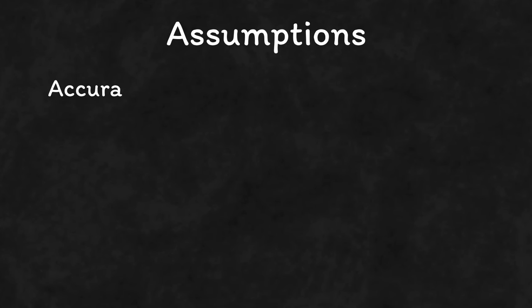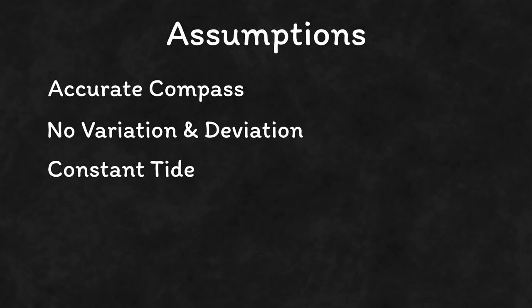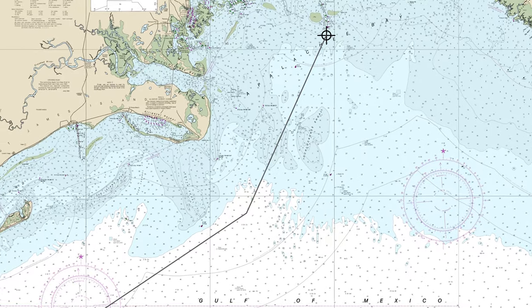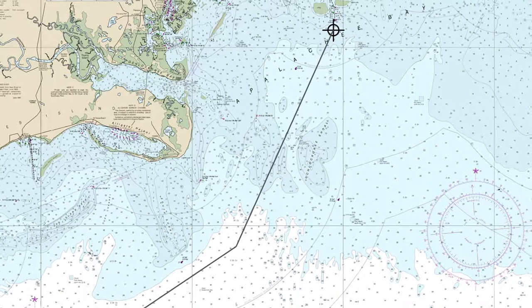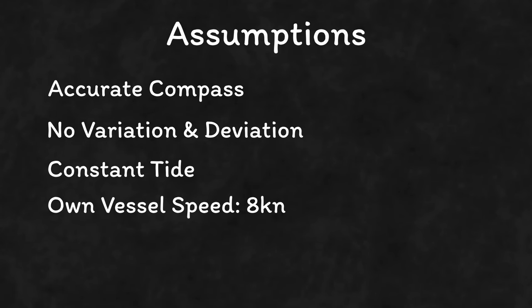To start with let's make a few assumptions. We'll assume our compass is really accurate with no error. We're also going to assume there's no variation and deviation, so maybe we're using a fiber optic gyro compass — we're going to get to variation and deviation in another video. We've also got to assume the tide is pretty much constant throughout our leg. It's just over 13 miles and as our vessel travels at 8 knots it's going to take us a little over 90 minutes, so I'm quite happy with that assumption.